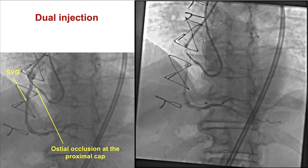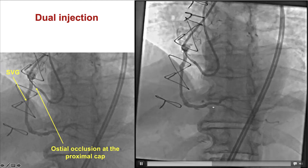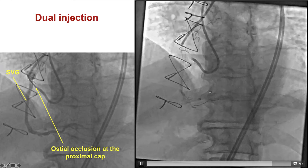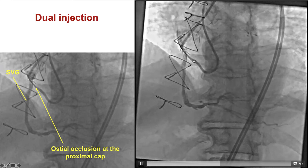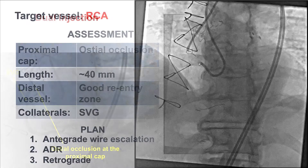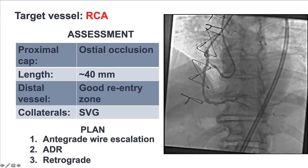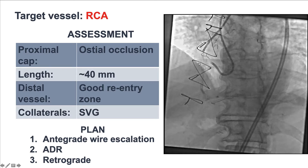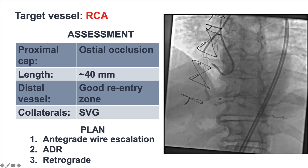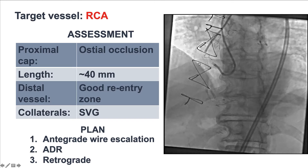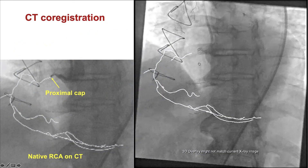These are the angiographic images. The vein graft had restored flow after successful recanalization. The right coronary artery was occluded in its proximal segment. We have occlusion of the proximal RCA, length about 40 millimeters, a decent re-entry zone, and there is the vein graft available for the retrograde approach.